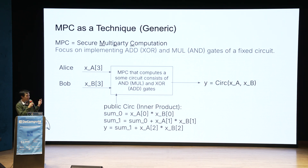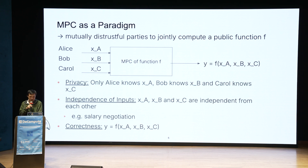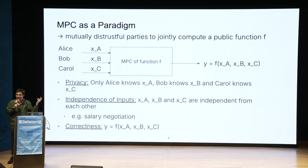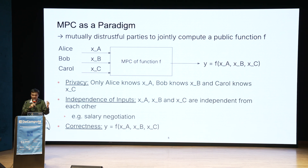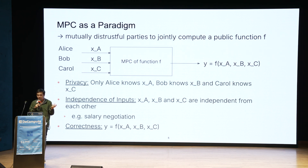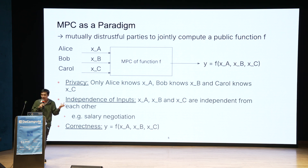MPC as a paradigm is actually the definition we usually use in cryptography. We have mutually distrustful parties jointly computing a public function F. We have three parties each with a secret input XA, XB, and XC, and we want to compute F over those inputs with properties of privacy, independence of inputs, and correctness.